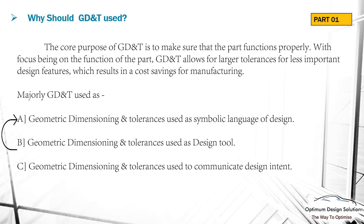A drawing with properly applied geometrical dimensioning and tolerances provides the best opportunity for uniform interpretation. GD&T is used as a design tool. Before applying geometrical dimensioning and tolerances, the designer must carefully consider the fits and function of each part. That means the designer should focus on the function of the part, manufacturing process of the part, and inspection method for the particular part. Hence, parts with larger tolerances assembled properly function greatly and reduce manufacturing and inspection cost.